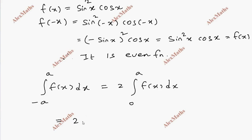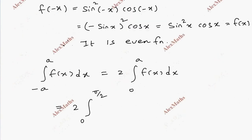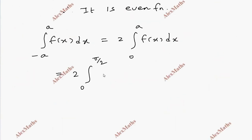So we need 2 times the integral from 0 to π/2 of f(x) dx, which is 2 times the integral from 0 to π/2 of sin²x · cos x dx. This is the direct integration to evaluate.